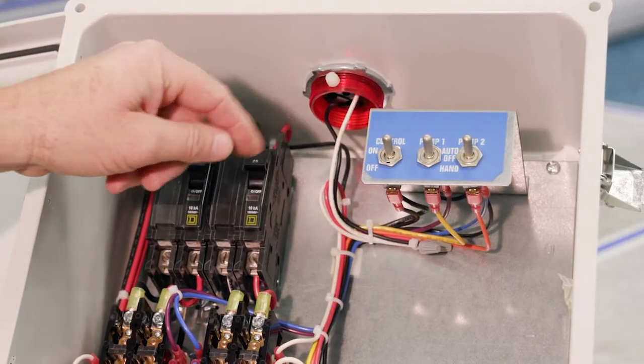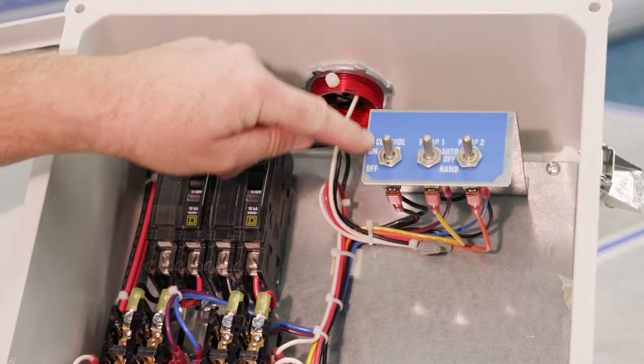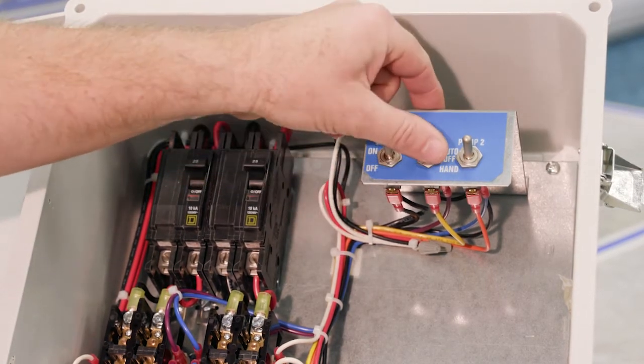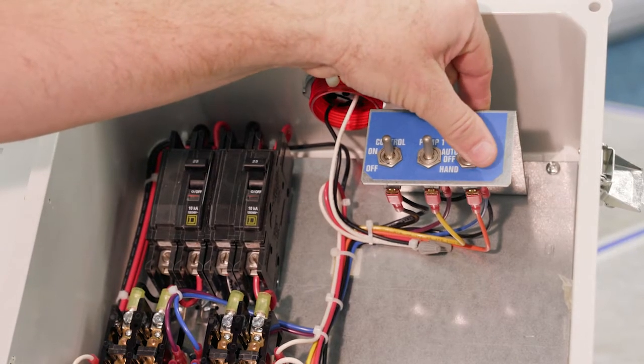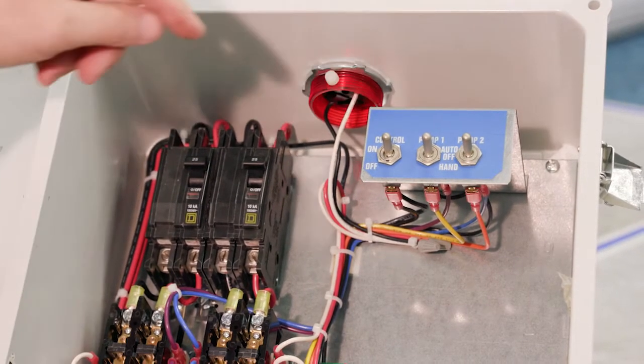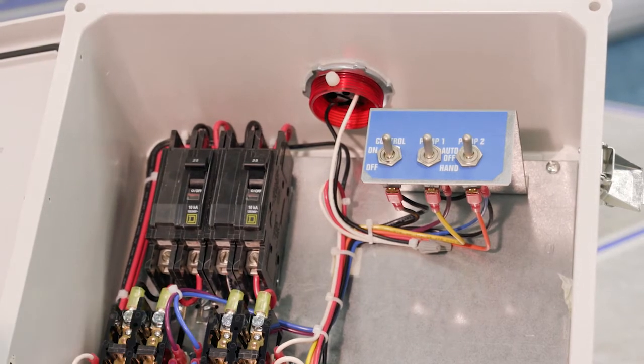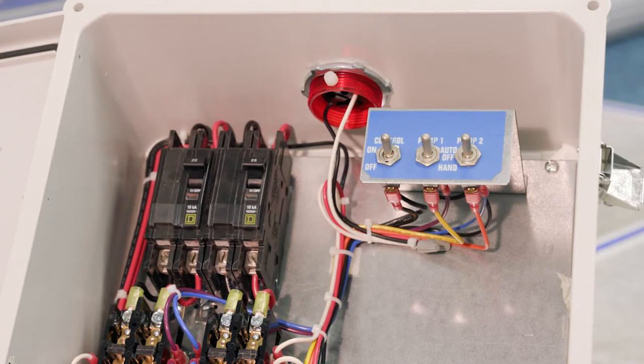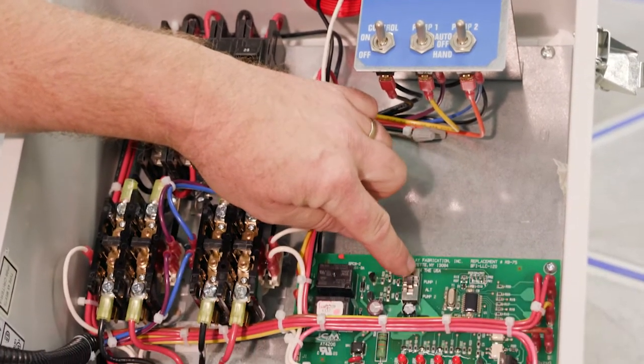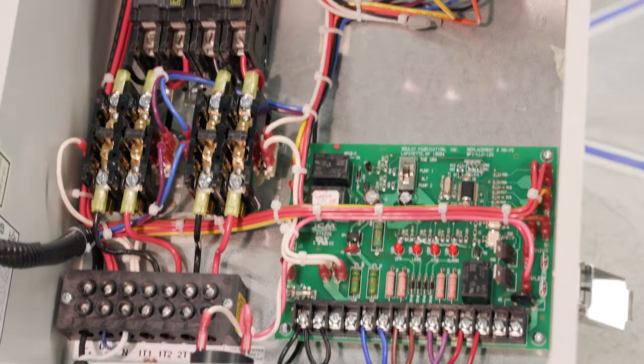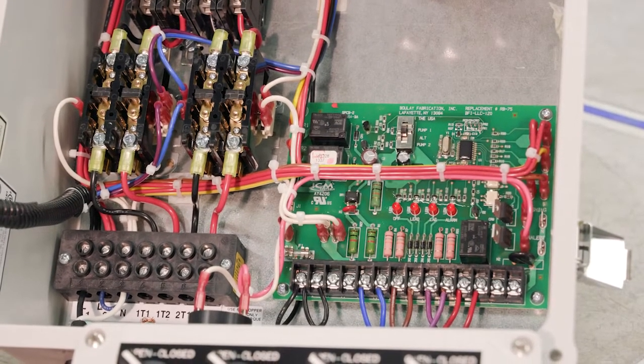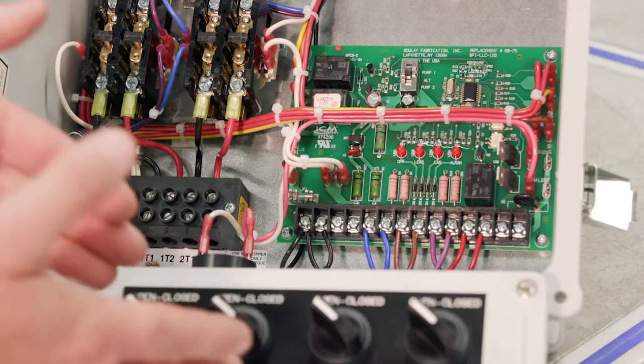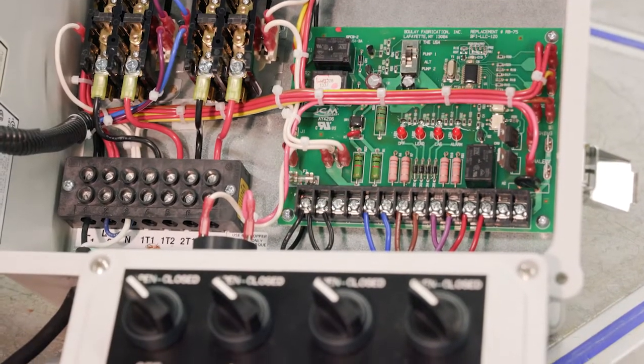One thing we have to do is we've got to make sure the control switch is on. And also our HOA switches are set to auto. So hand off auto. Auto basically means that it's going to automatically work based on your float switches. So we've got those set properly. The alternator, which is right here, make sure that's in the middle, set to alternation. So now what we're going to do is we've got power applied, the power is turned on, and then we're going to simulate those float switches.